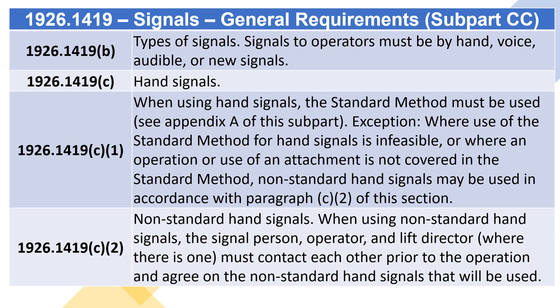1926.1419(B) — Types of Signals: Signals to operators must be by hand, voice, audible, or new signals.